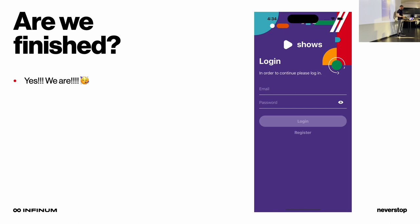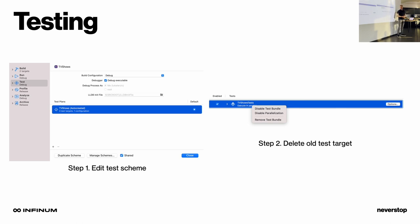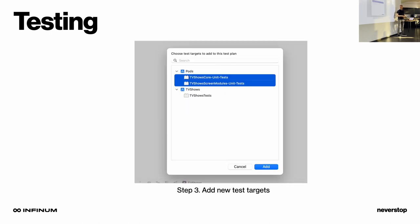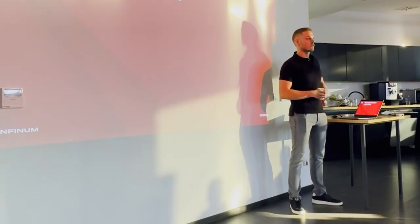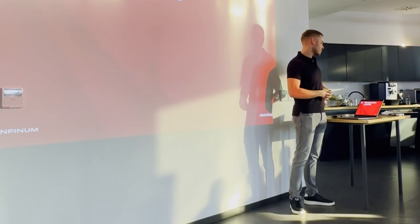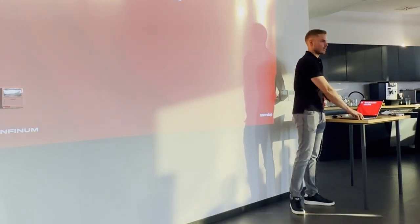But we still need to set up our test targets. Before we had just one test target; now we need to delete it from our schemes since all the test files are moved into separate modules. We'll remove it and then add the TV Shows Core unit tests and TV Shows Screen Modules unit tests, and we're done with the tests. Now we saw how to implement modularization with CocoaPods — let's see how different it is with SPM, and spoiler alert, it's a lot simpler.